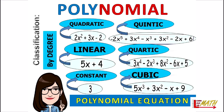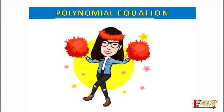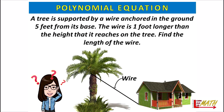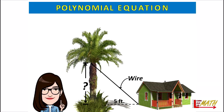Are you ready? Here is our sample problem. Suppose you have a tree which is supported by a wire anchored in the ground five feet from its base. The wire is one foot longer than the height that it reaches on the tree, and you want to find the length of the wire. Is it possible? Yes, it is! We will just let x be the height that the wire reaches on the tree.